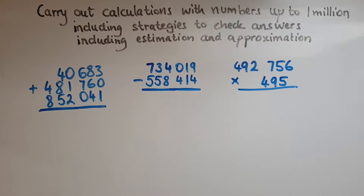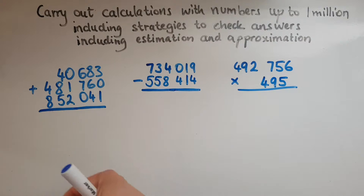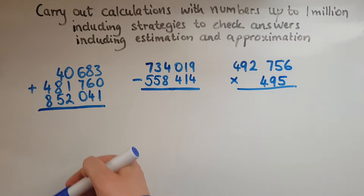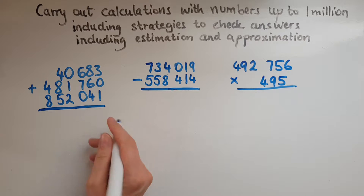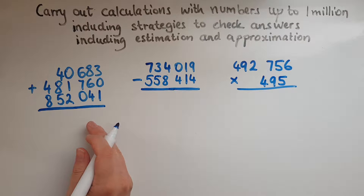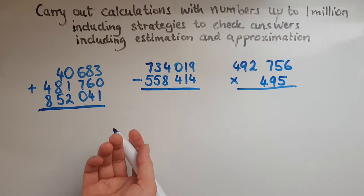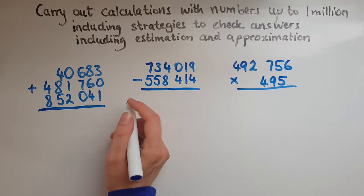So we start by lining up the numbers correctly, meaning that digits with the same value are under each other. So units under the units, tens under the tens, hundreds under the hundreds and so on. We start adding from the right — adding up the units — because if we have anything to carry over we can do so to the tens and then to the hundreds and so on.